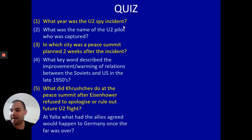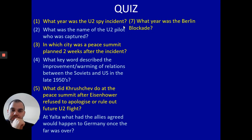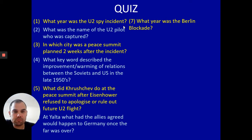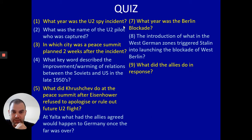These ones go slightly further back. Question six: at Yalta — the first conference to decide what would happen post-war — what had the allies agreed would happen to Germany once the war was over? Question seven: what year was the Berlin Blockade? In what year did Stalin blockade West Berlin? Question eight: the introduction of what in the West German zones triggered Stalin into launching the blockade of West Berlin?